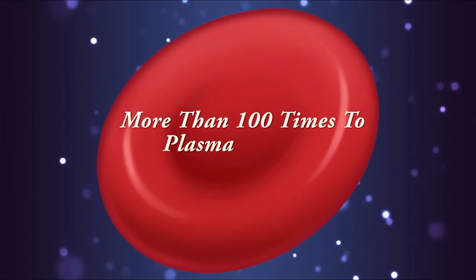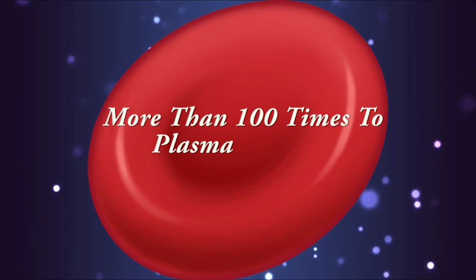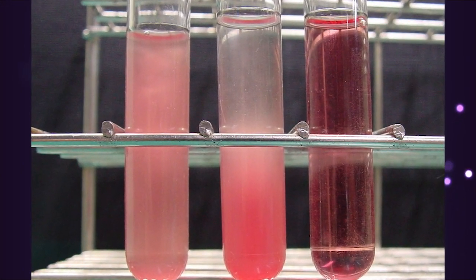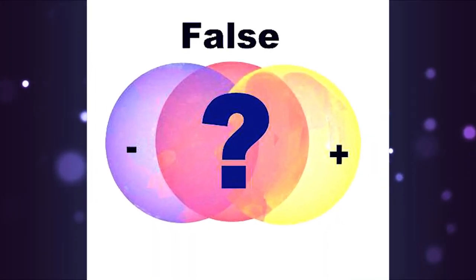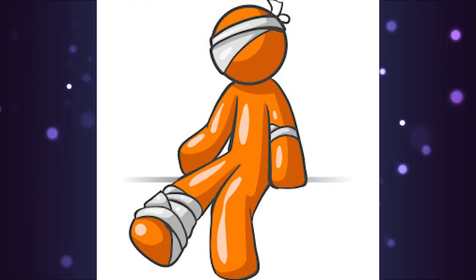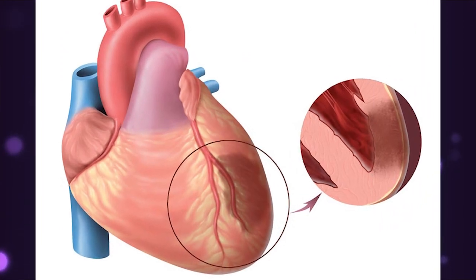Lactate dehydrogenase enzyme level is 100 times more inside the RBC than in plasma. Therefore, minor amounts of hemolysis will result in a false positive test. Because it is released during tissue damage, it is a marker of common injuries and disease such as myocardial infarction.